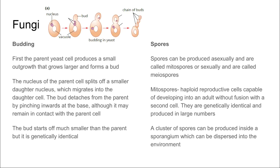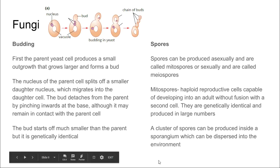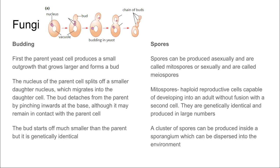Fungi can also produce spores, and these are produced asexually. They can be mitospores or meiospores depending on how they are reproduced. Because we're looking at asexual reproduction in this video, we're going to be looking at mitospores. These are haploid reproductive cells that develop into an adult without fusion with a second cell, and they are genetically identical and produced in large numbers.